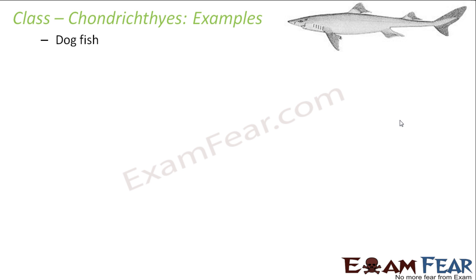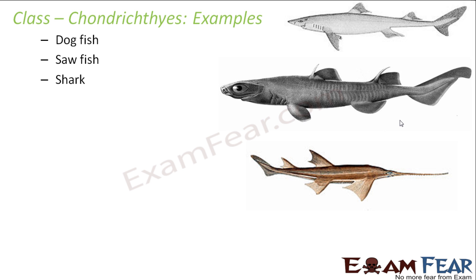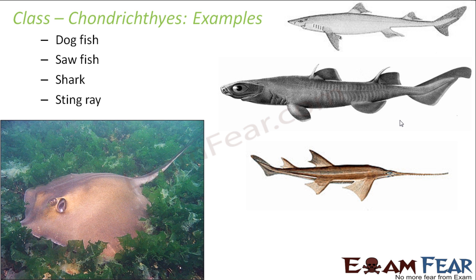Examples of Chondrichthyes include dogfish, sawfish, shark, and stingrays. Their size can vary — from very small to very large. The stingray can measure up to 45 centimeters across and is generally seen in sandy or muddy habitats. It has a whip-like tail and a distinctive diamond-shaped pectoral fin. Dogfish and shark look quite similar to each other.